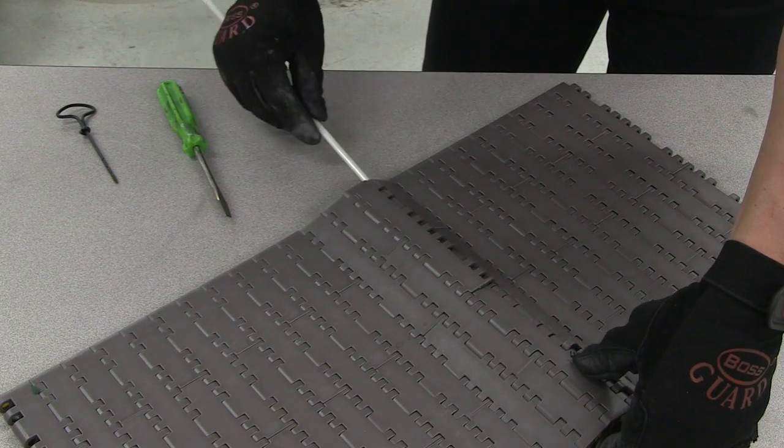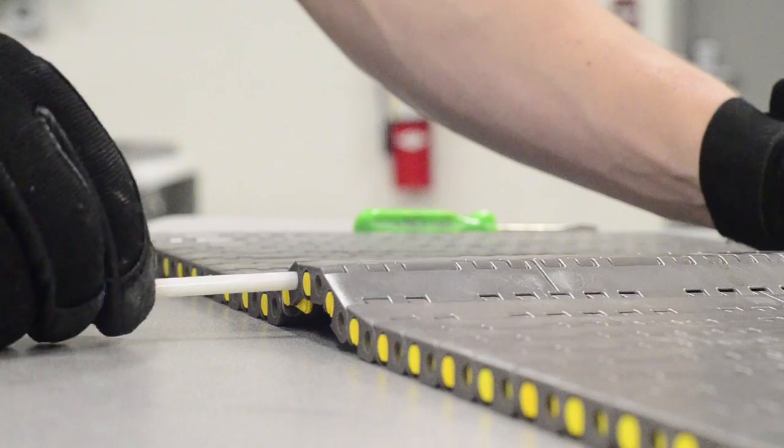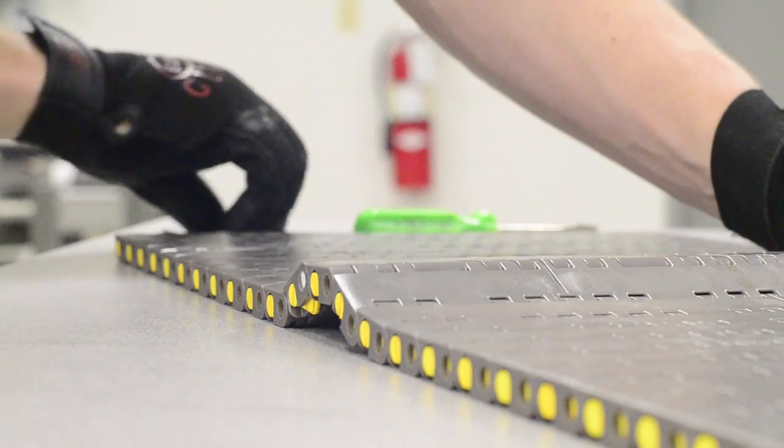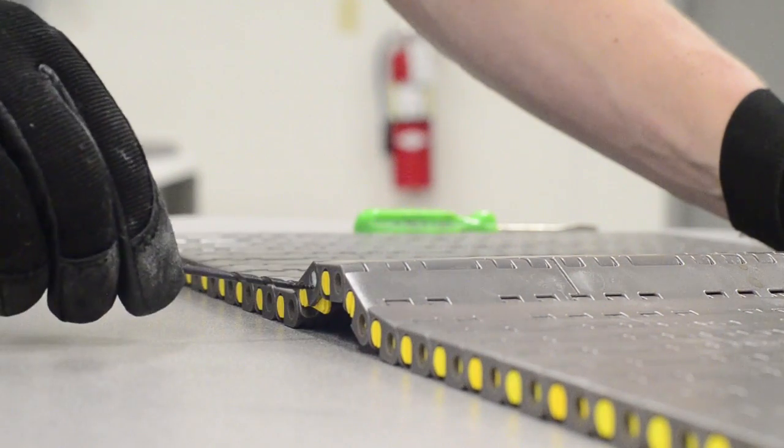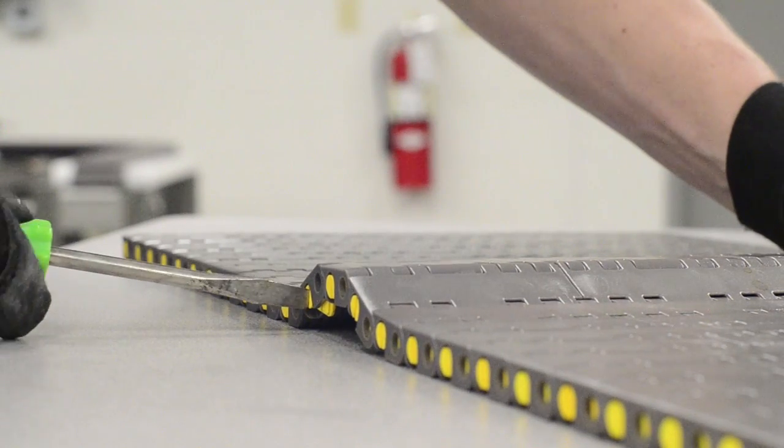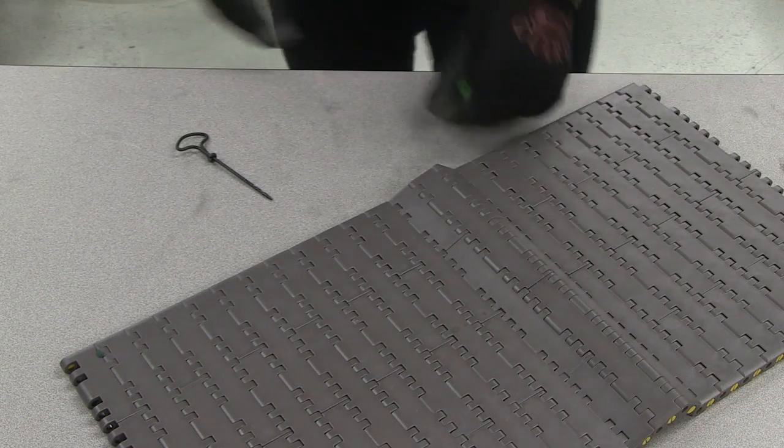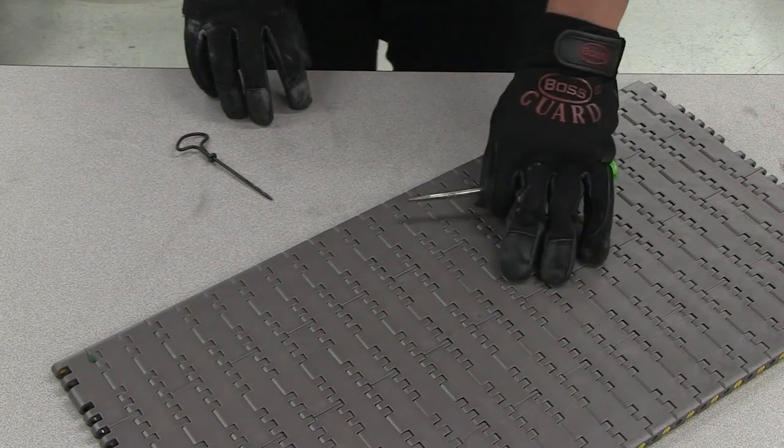To reassemble, reinsert the pin and rotate the twist lock plug in the reverse direction until it is back in the closed position. Your mat top chain is now assembled and ready for operation.